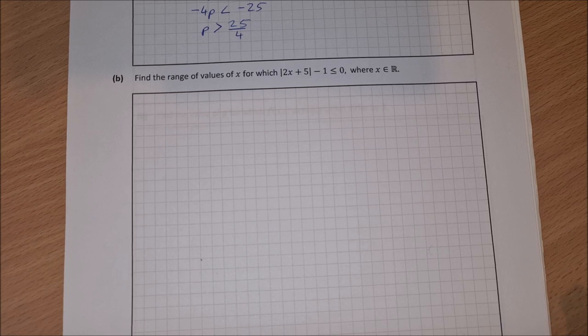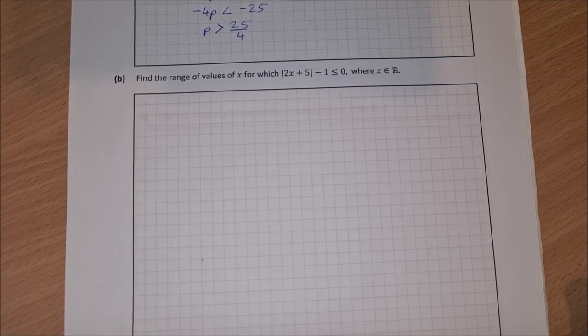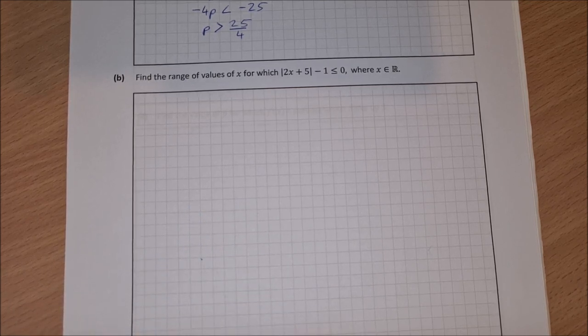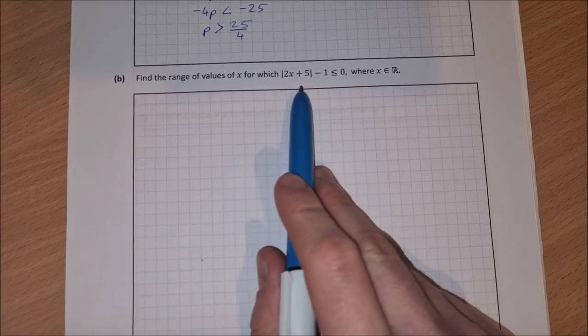Part b then, find the range of values of x for which the absolute value of 2x plus 5 minus 1 is less than or equal to 0. So this part has no relation to part a. It's just a standalone question. So we have this modulus inequality here.